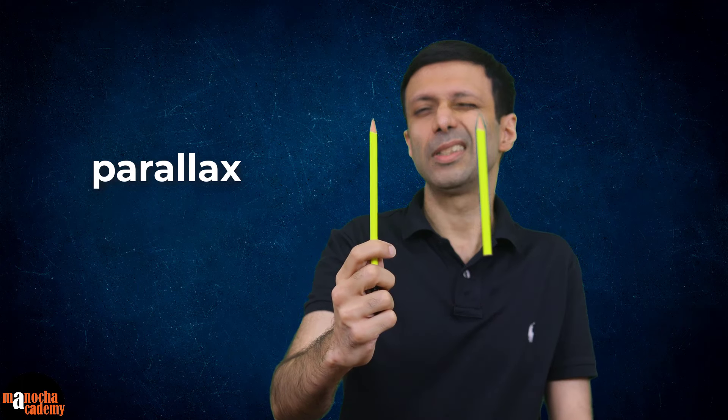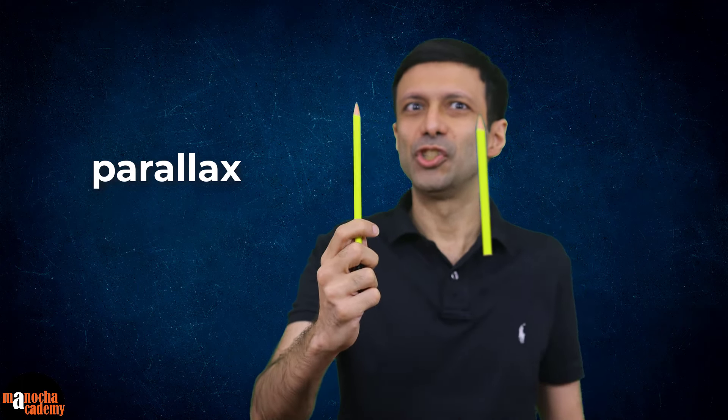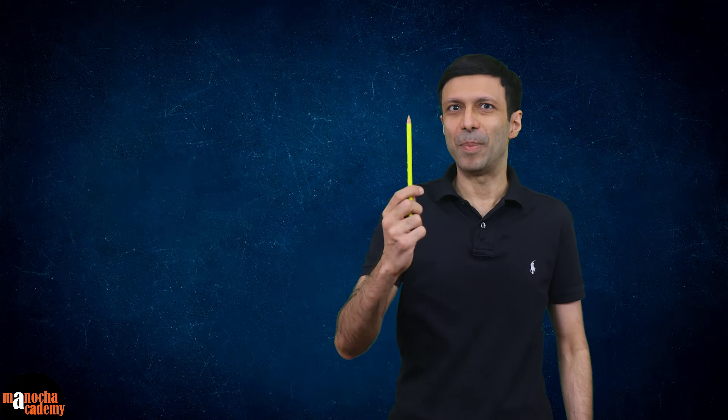This is due to parallax. You are viewing the same object from different angles like this, so the pencil appears to shift. If you consider the pencil and your two eyes, can you see it's going to form a triangle like this.